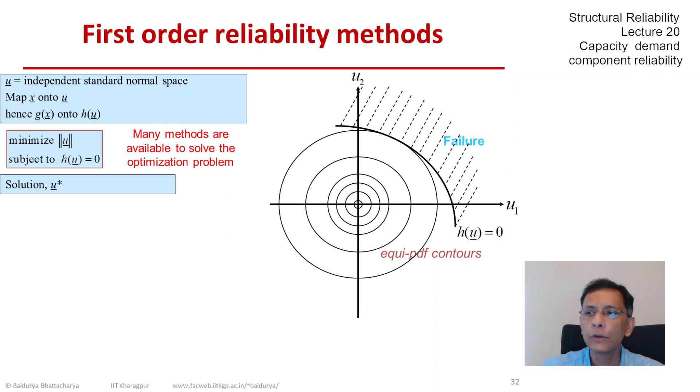Whichever method we use to solve this optimization problem, let us say the answer is u star. So u star is a point on the limit state equation h equals 0.